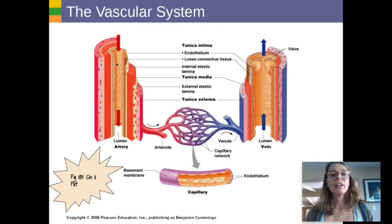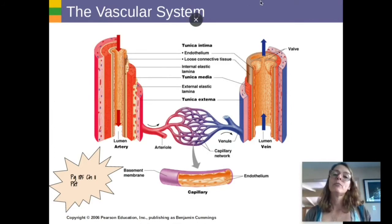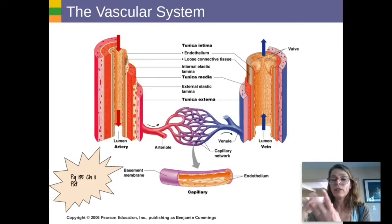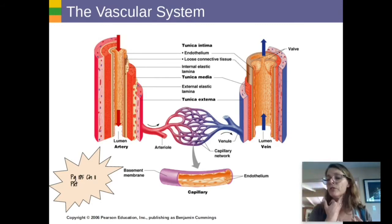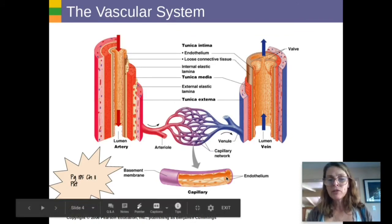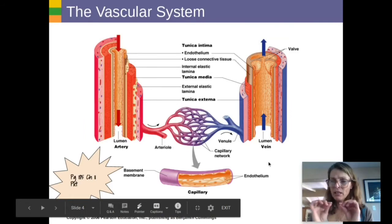If you prick an artery, though, the huge amount of pressure would cause blood to squirt out — it might even squirt out in pulses, like the pulse you feel when you're feeling an artery. Capillaries are just made of the innermost layer, the endothelium, and they're designed to be really thin so that diffusion can occur.